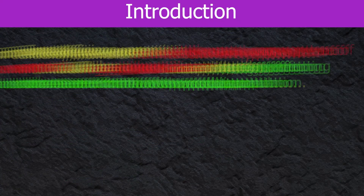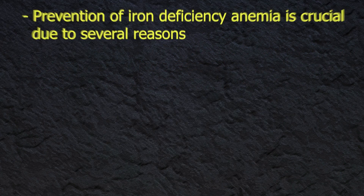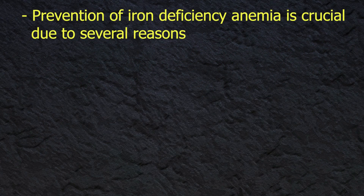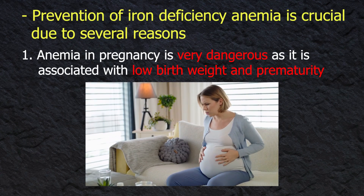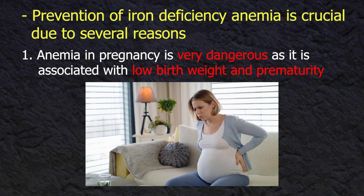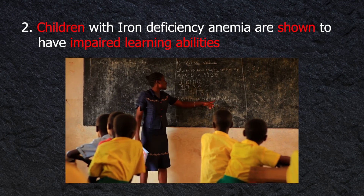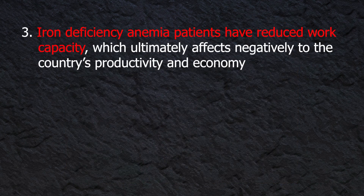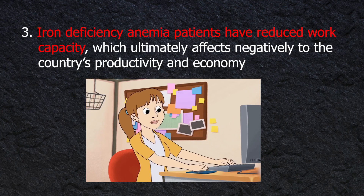Iron deficiency anemia is the most common type of anemia and has a huge disease burden, affecting almost one-fourth of the world's population. Prevention is crucial for several reasons: anemia in pregnancy is very dangerous as it is associated with low birth weight and prematurity. Children with iron deficiency anemia are shown to have impaired learning abilities, and patients have reduced work capacity, which ultimately affects the country's productivity and economy.